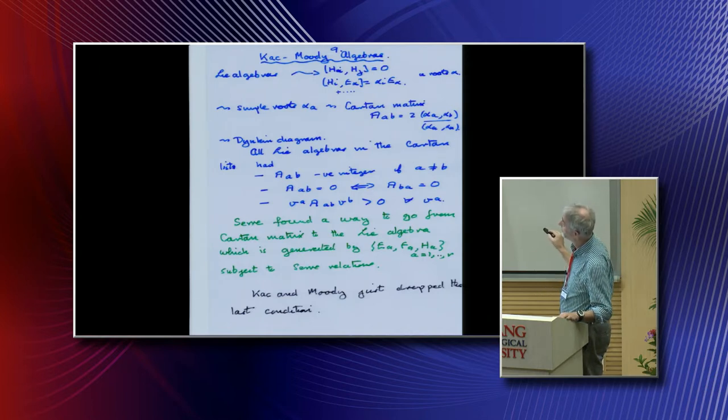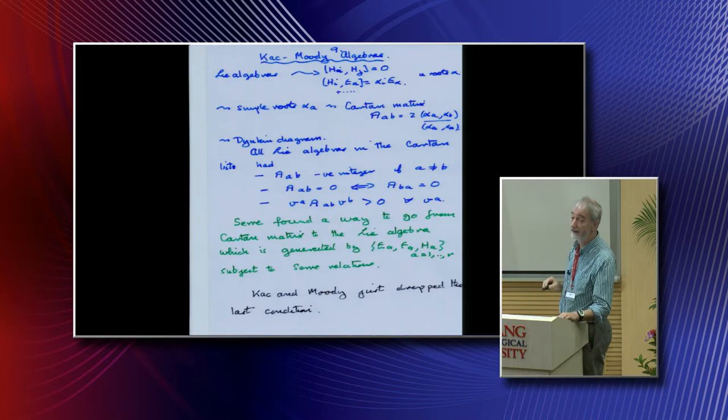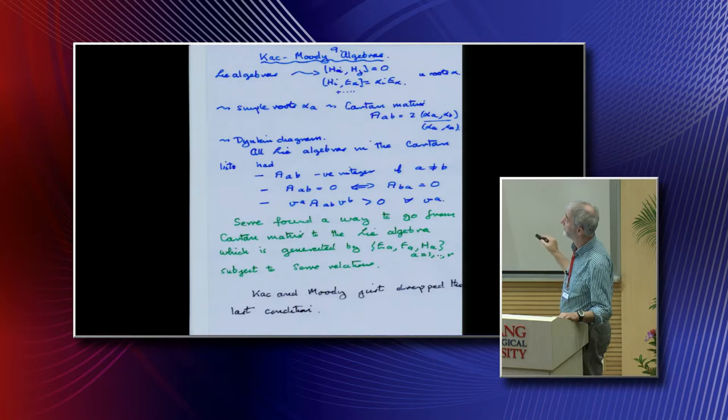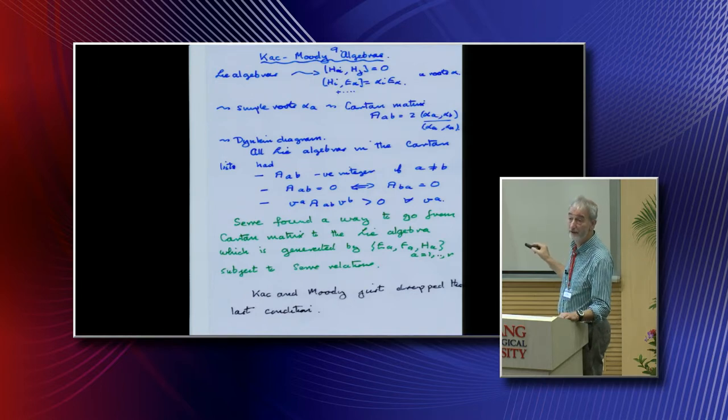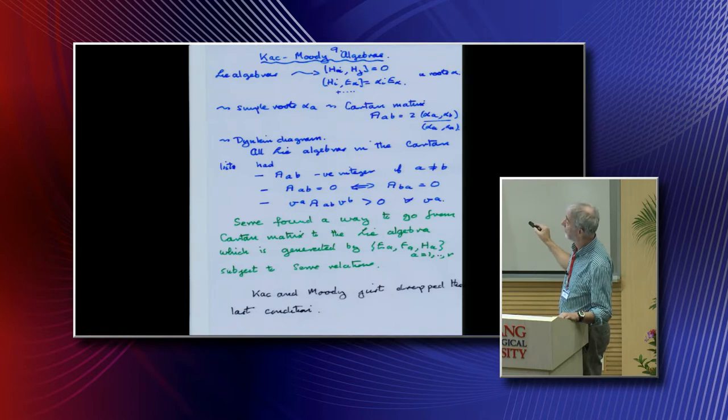When they thought about this, they realized there were some algebras they were missing, and this was how, for example, E8 was discovered. They had these properties, and then they looked for algebras that did it. That was long ago, but in the 1950s, Serre looked at this and found a way to go back from the Cartan matrix to the Lie algebra.